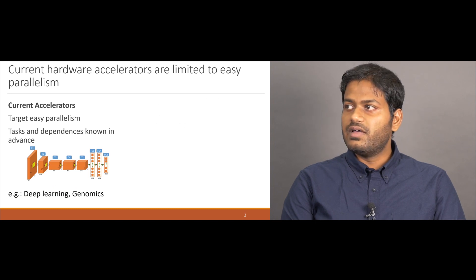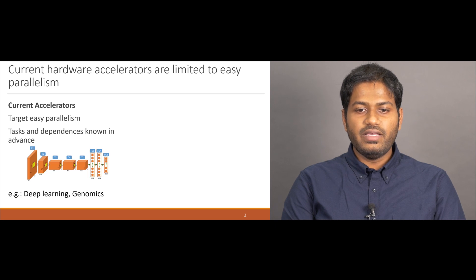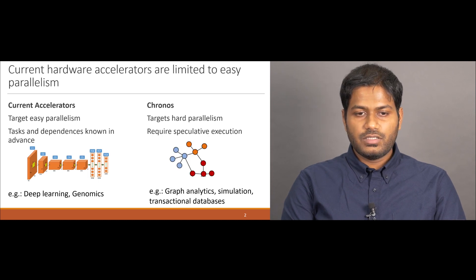We observe that current accelerators have mostly focused on applications with easy parallelism, where tasks and dependencies are known in advance and parallelism is easy to extract. This kind of problems are common in domains like deep learning and genomics. In contrast, Kronos targets applications which are hard to parallelize, where speculative execution is often required to extract parallelism. These kind of applications are present in graph analytics, simulation and transactional databases.